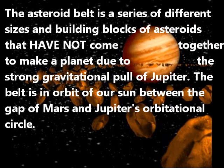The Asteroid Belt is a series of different sizes and building blocks of asteroids that have not come together to make a planet, due to the strong gravitational pull of Jupiter. The belt is in orbit of our sun between the gap of Mars and Jupiter's orbital circle.